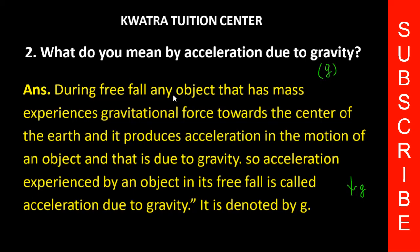If an object comes under the gravitational force, it will experience gravitational force. If it has mass, then it can experience gravitational force — acceleration due to gravity — towards the center of the Earth. It produces acceleration in the motion of an object. So the acceleration experienced by an object in its free fall is called acceleration due to gravity, and it is denoted by G.